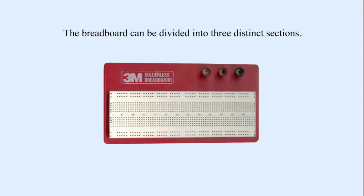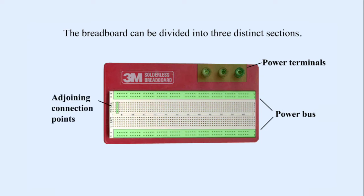The breadboard can be divided into three distinct sections: power terminals, power bus, and adjoining connection points.